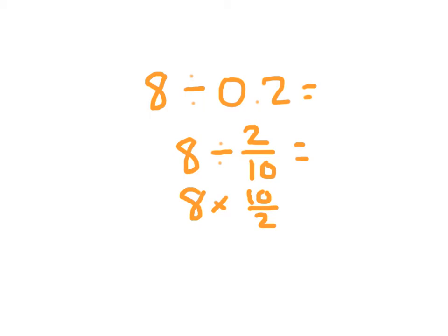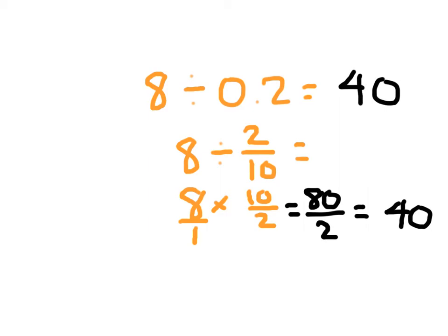I can also write 8 as 8 over 1, so I have a fraction for that whole number and the reciprocal. At this point, I just multiply. 8 times 10 is 80, and 1 times 2 is 2. Let's simplify this. 80 halves: 80 divided by 2 is 40. So my answer for 8 divided by 0.2 is 40.